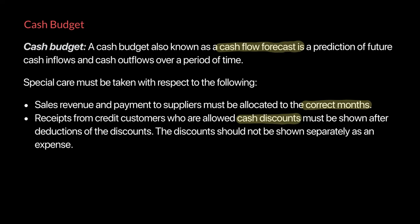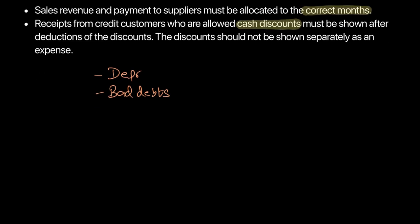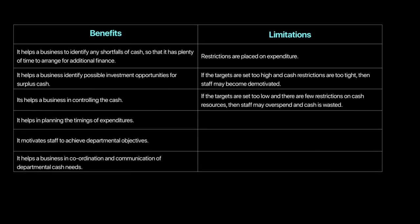Any non-cash item will not be recorded in the cash budget. Non-cash items include depreciation — that will not go in the cash budget as it's a non-cash expense. Bad debts will also not be included in the cash budget, as they are also non-cash expenses. Whenever we come across these terms, we need to remember they will not be included in the cash budget; rather, they would be included in the income statement for the firm.